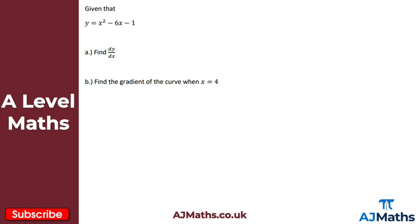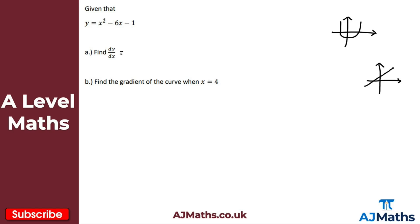Now let's look at finding the gradient through differentiation. We have y equals x squared minus 6x minus 1. This is a quadratic — a parabola — where the gradient changes depending on the value of x, unlike a straight line where the gradient is constant. This is where differentiation becomes really useful. Differentiating term by term: dy/dx equals 2x minus 6.